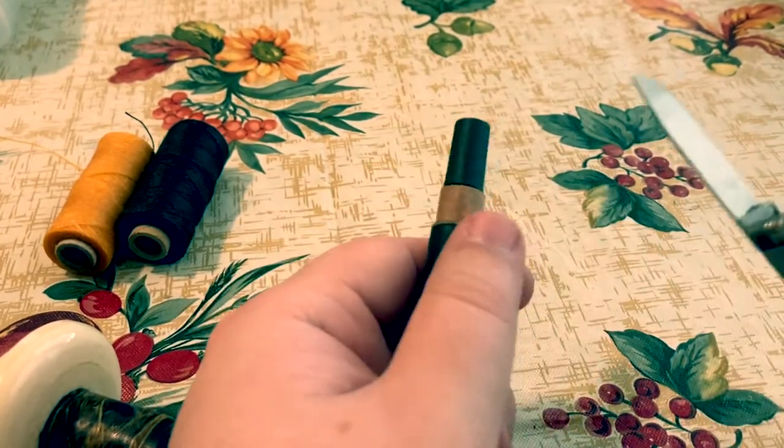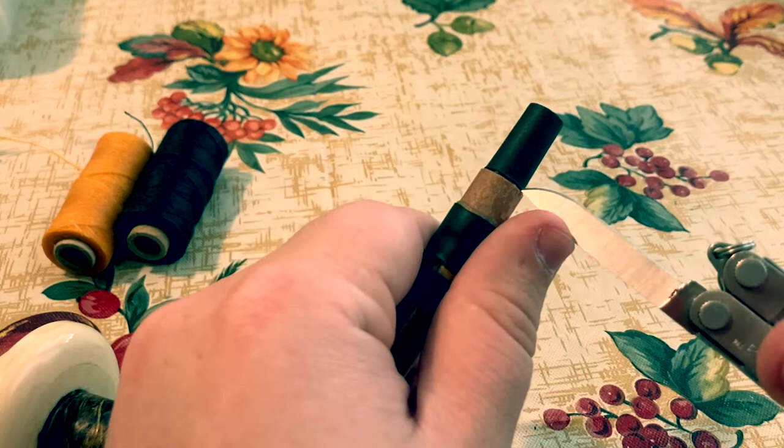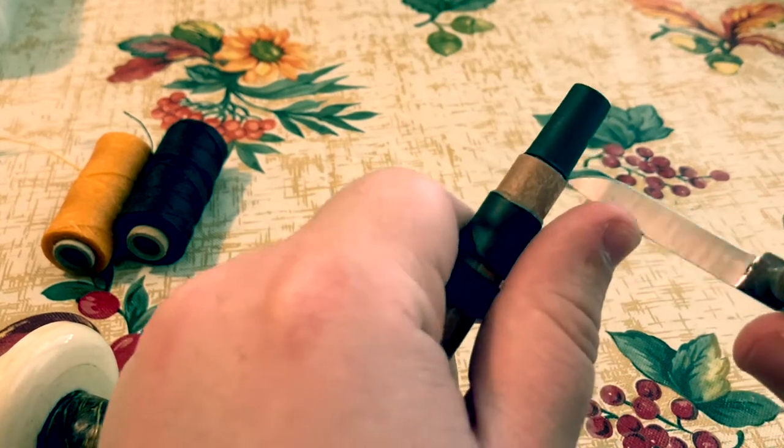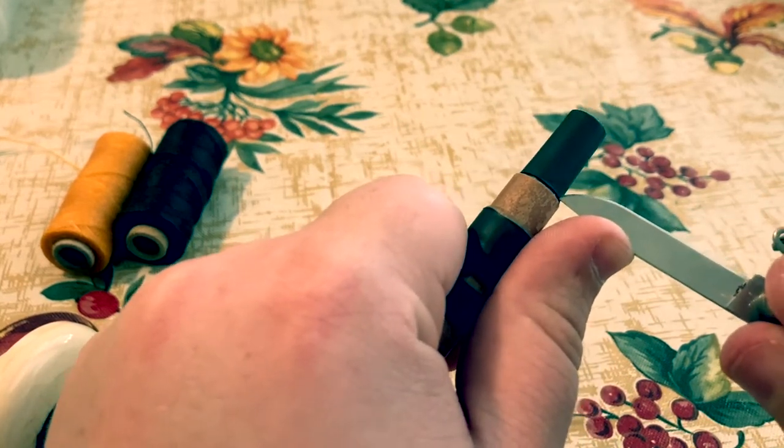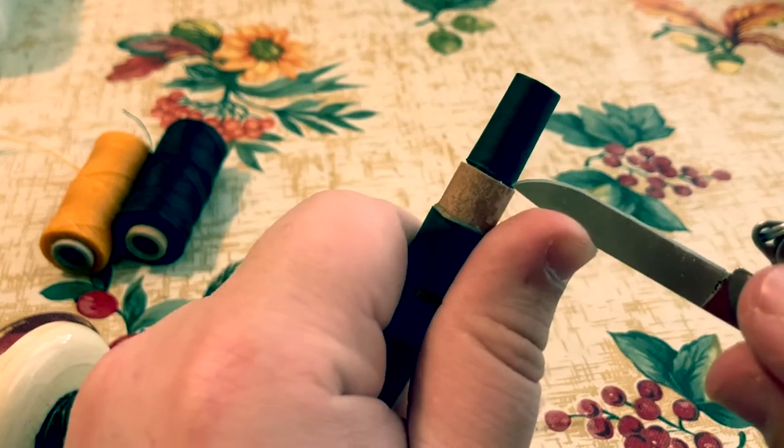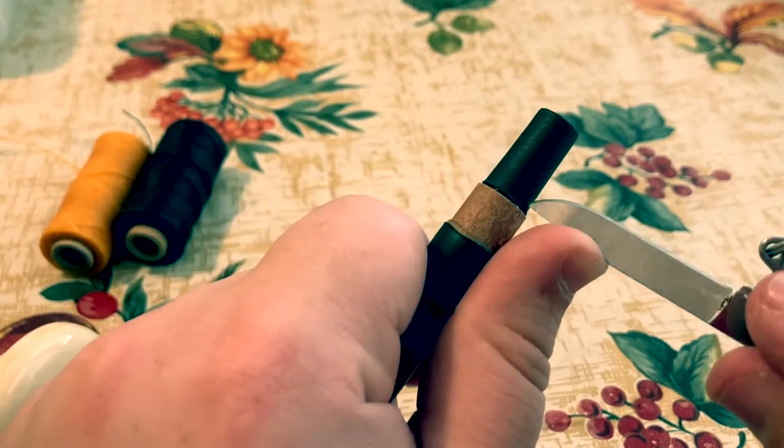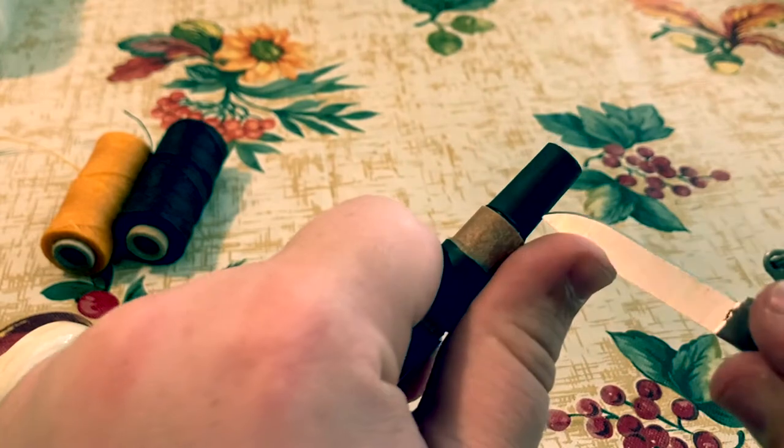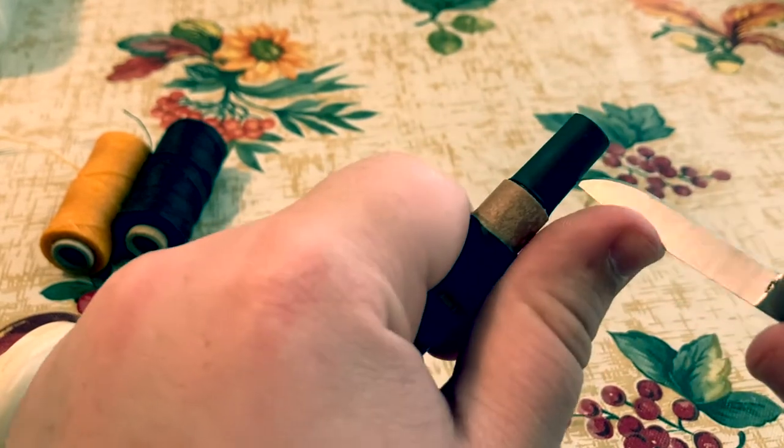So the way we're going to do that is we're going to take our knife, keep our hand out of the way. You always want to think about how you could hurt yourself if you accidentally slip. So my hand's out of the way. We're taking the knife nice and low and we're just slowly going to work our way up and cut through the rubber.